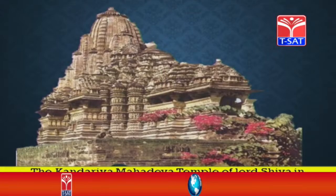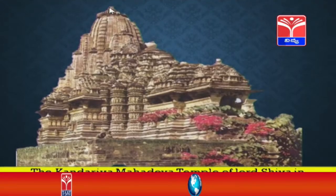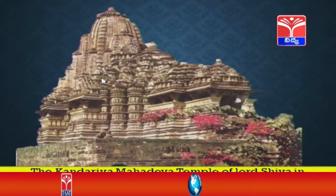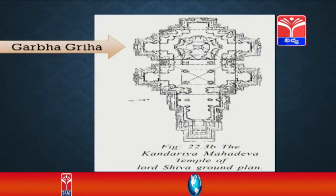Let us reconstruct the Kandarya Mahadeva temple of Lord Shiva at Kajuraho. The front part is the entrance with a decorated gateway; going to the center you find the Mahamandapa, and where the dome shape is, at the center, there is the Garbagriha. The ground plan shows the Garbagriha area, with rectangular corbelled shapes, and you can identify the Garbagriha, the Mahamandapa, and the gateway.